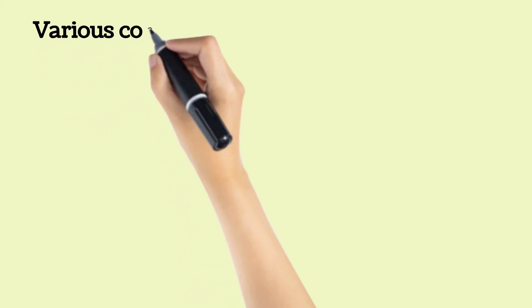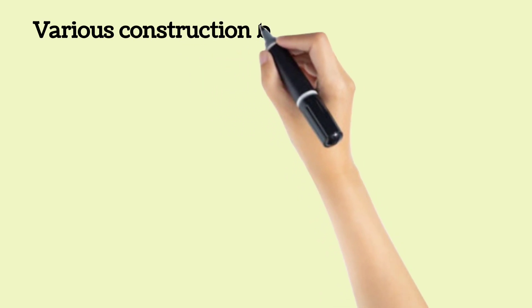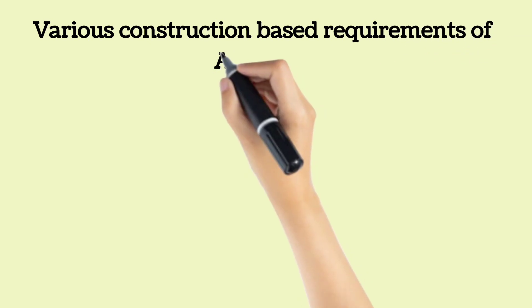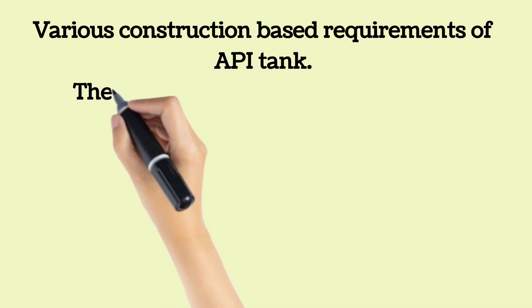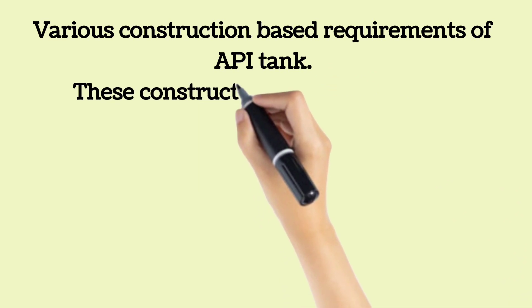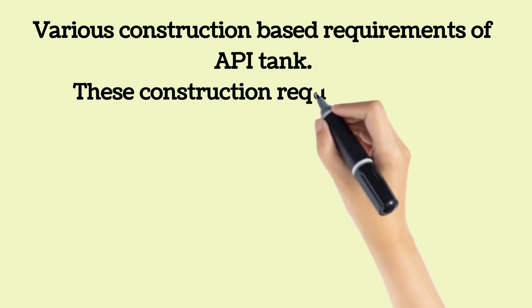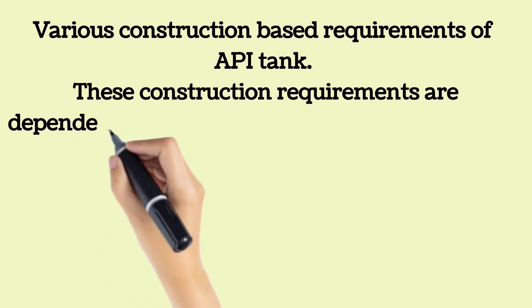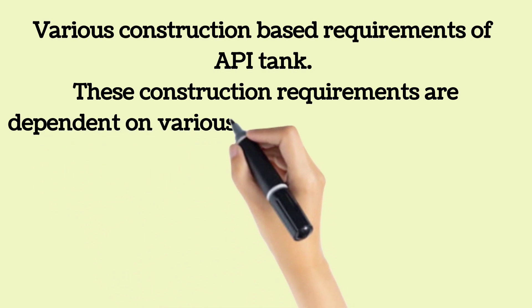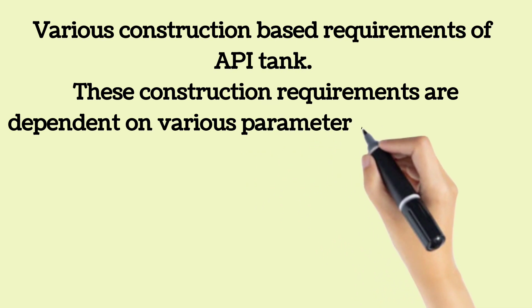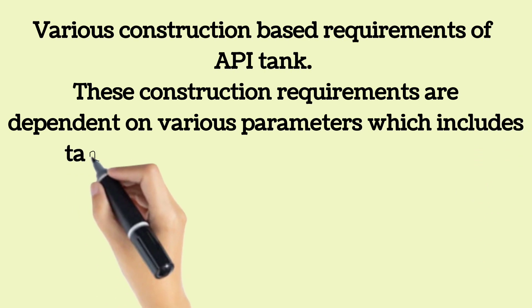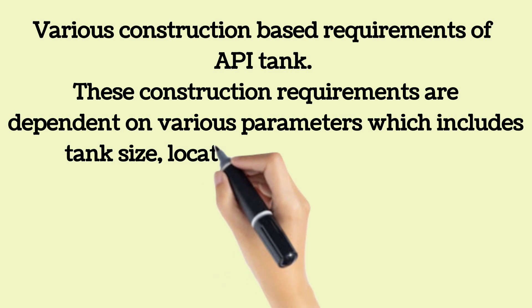The American Petroleum Institute, often referred to as API, has dictated the construction-based requirements of an API tank. These construction requirements are dependent on various parameters which include tank size, location, and stored material characteristics. API standards also dictate various materials and processes used during construction and welding, as well as tank testing procedures. Special elements such as nozzle reinforcement pads and structural supports are properly detailed in various API standards.